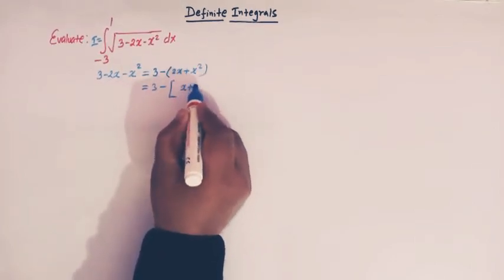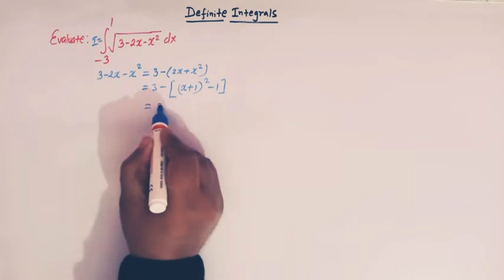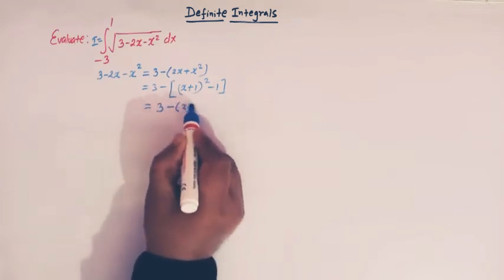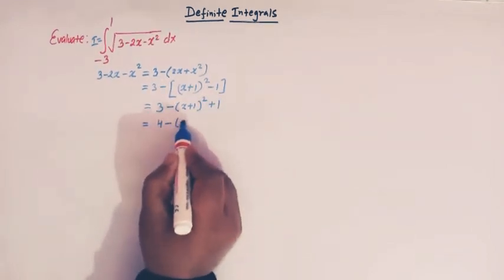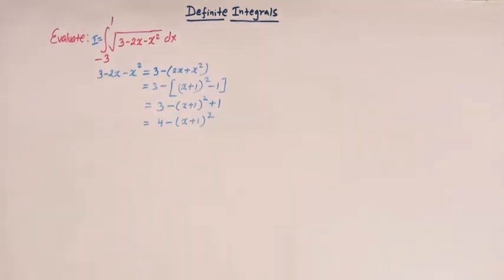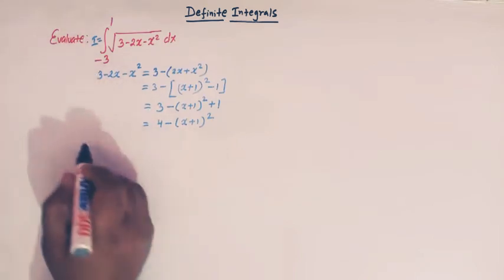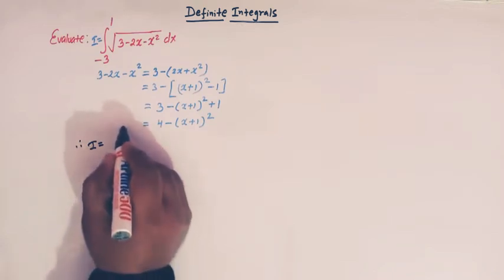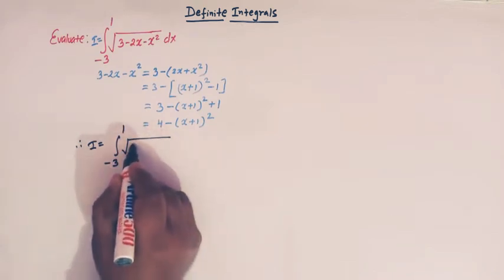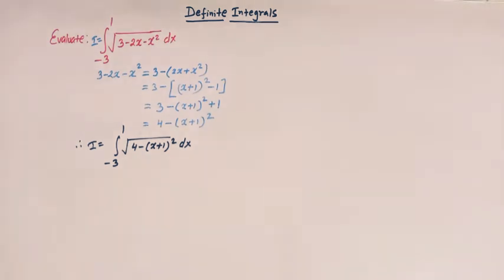We can write x² + 2x as (x+1)² minus 1. So we have 3 minus [(x+1)² - 1], which gives us 4 minus (x+1)². So the quadratic polynomial has been expressed as a perfect square. Therefore our integral becomes the integral from minus three to one of the square root of 4 minus (x+1)².